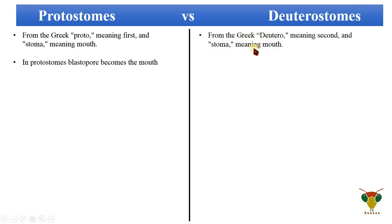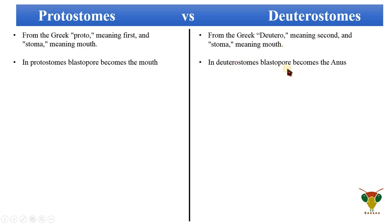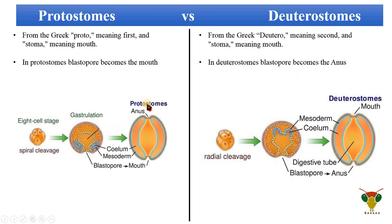In the deuterostomes, 'deutero' means second and 'stoma' means mouth. So in the case of deuterostomes, the formation of the mouth is the second priority. The deuterostome blastopore becomes the anus and not the mouth. We can see in the diagrammatic form that the blastopore develops into the mouth in protostomes and into the anus in deuterostomes. How the anus of protostomes and the mouth of deuterostomes develop will be discussed in the next slides.